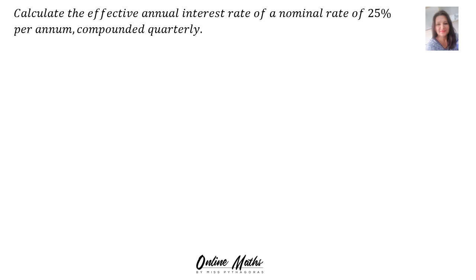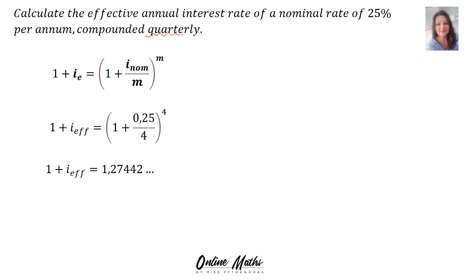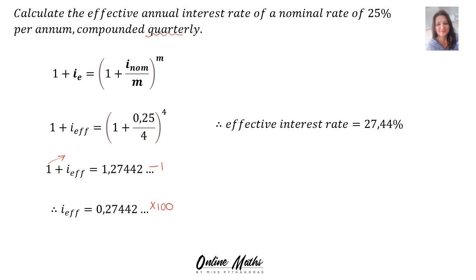Calculate the effective annual interest rate of a nominal rate of 25% per annum compounded quarterly. Using the formula, I-effective equals 1 plus 0.25 divided by 4, raised to the power of 4. Working the right-hand side out with the calculator gives 1.274... Subtracting the 1 gives 0.27442, and multiplying by 100, the effective interest rate is 27.44%.